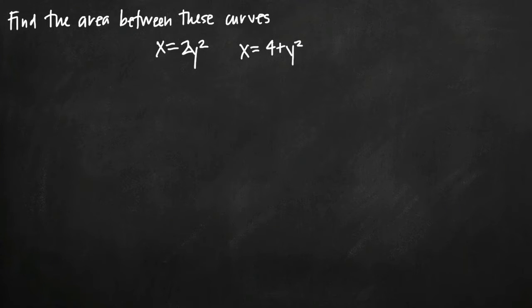Today we're going to be talking about how to find the area between curves when the curves are defined as x equals something in terms of y. In this particular problem we have the two curves x equals 2y squared and x equals 4 plus y squared.